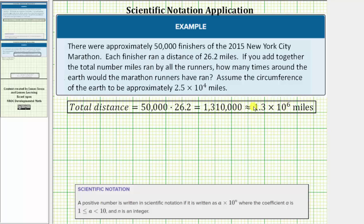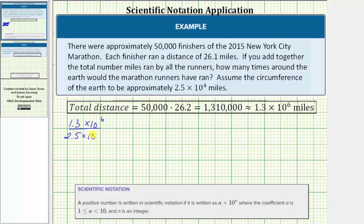We'll round this to 1.3 times 10 to the sixth using scientific notation. So to answer this question, we need to determine how many 2.5 times 10 to the fourth miles would be in 1.3 times 10 to the sixth miles. Which means to answer the question, we need to determine the quotient of 1.3 times 10 to the sixth and 2.5 times 10 to the fourth.